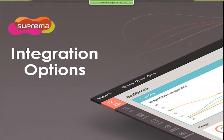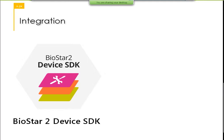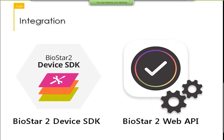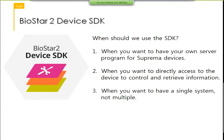Now I'm going to talk about the integration options. Currently we have our SDK, the Biostar 2 device SDK, and then we have the Biostar 2 web API. The SDK allows you to communicate with the devices without having to use our software, the Biostar 2. The Biostar 2 device SDK is used when you want to have your own server program for Suprema devices, or when you want to directly access device control and retrieve information, and when you want to have a single system. This applies if you have your own application already in market but want to add biometrics or use our devices.